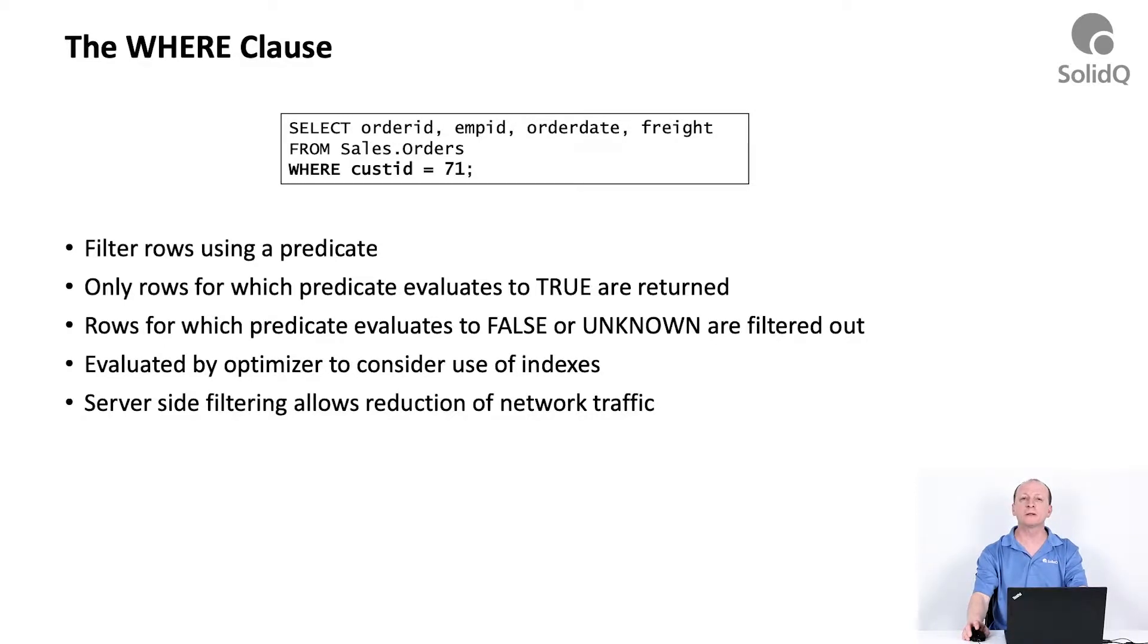Every time you compare something with a NULL, imagine there was a row where the customer ID was unknown and we checked in that row whether a NULL is equal to 71. We cannot say that the result is true and we cannot say that the result is false. SQL uses this logical value called UNKNOWN.